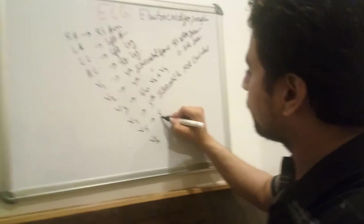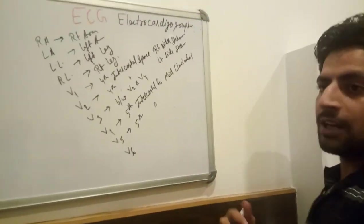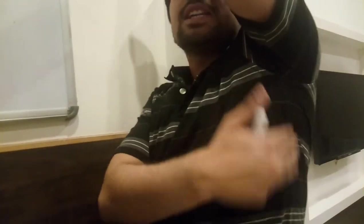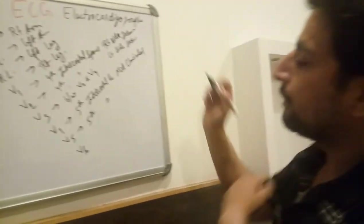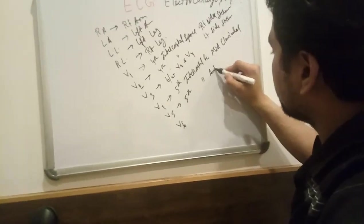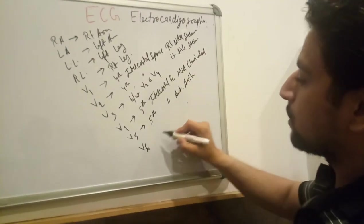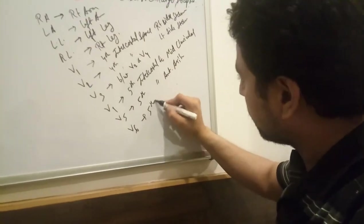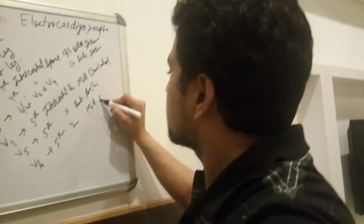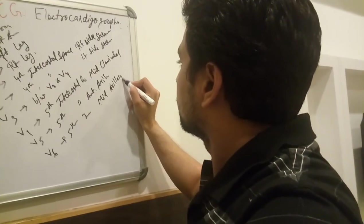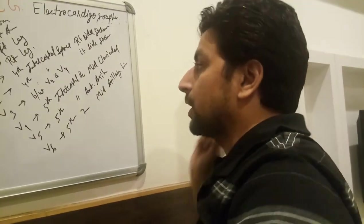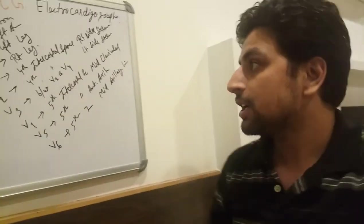V5 is placed at the fifth intercostal space on the anterior axillary line. Between anterior and posterior is the mid-axillary line. V6 is also at the fifth intercostal space on the mid-axillary line. So V4 is mid-clavicular, V5 is anterior axillary, and V6 is mid-axillary — all at the fifth intercostal space.